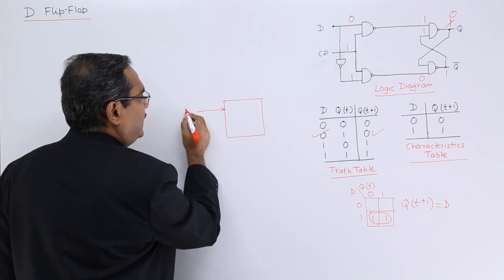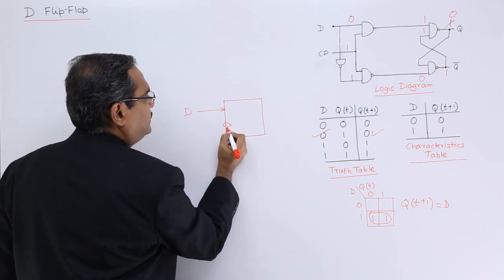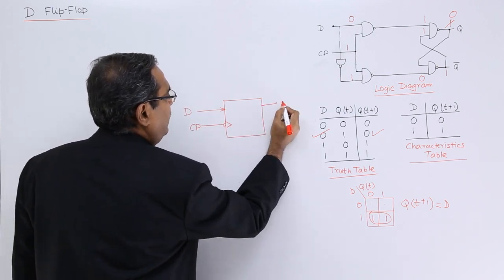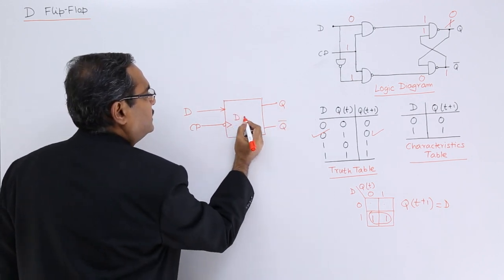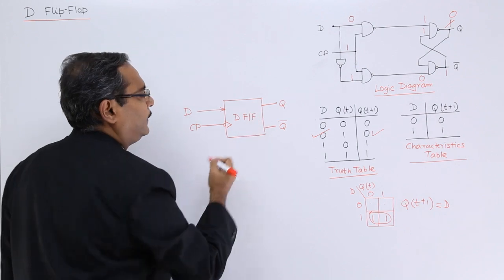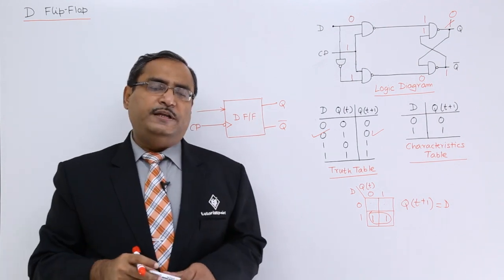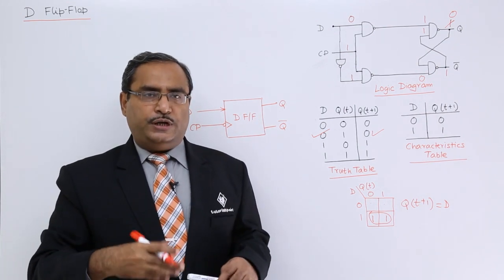It will have D as input. Let us suppose, this is our clock pulse and here we are having this Q and Q bar and that is known as the D flip-flop. This is the block diagram of D flip-flop which will be used in our circuits.